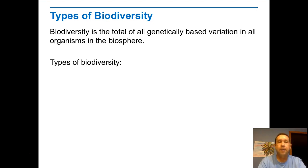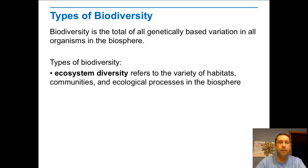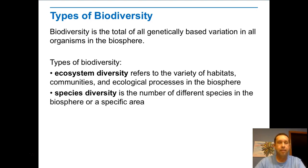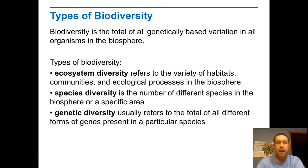Let's talk about the types of biodiversity. Biodiversity is the total of all the genetically based variations in all the organisms in the biosphere. There's ecosystem diversity, which refers to the variety of habitats, communities, and ecological processes in the biosphere. Species diversity is simply the number of different species in the biosphere or a specific area. And genetic diversity refers to the total of all the different forms of genes present in a particular species.